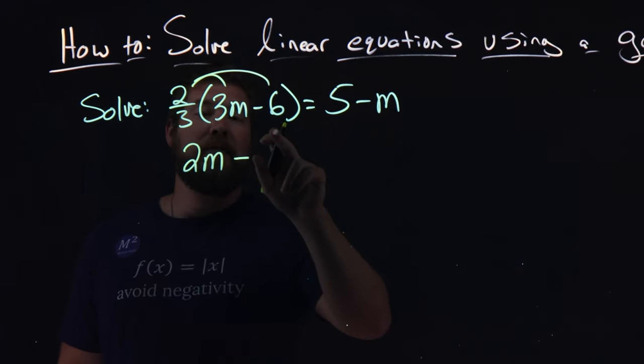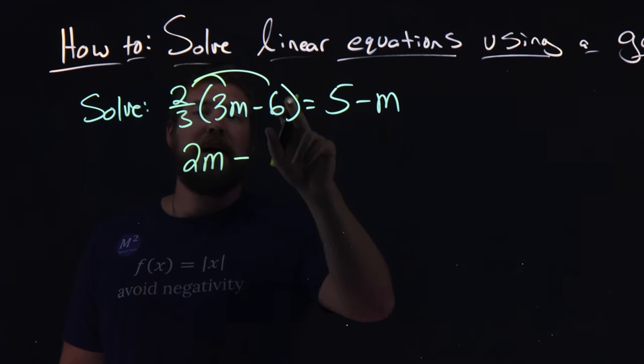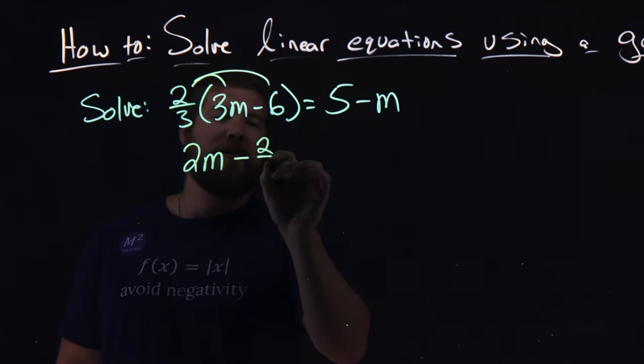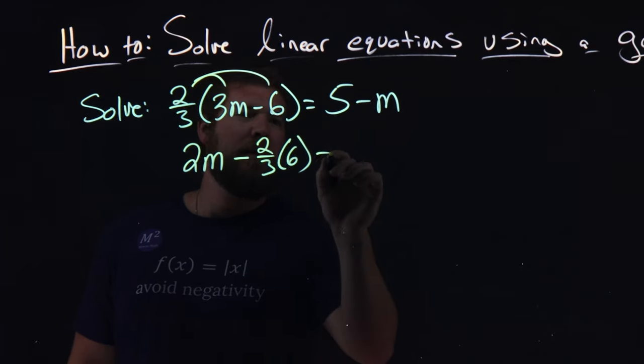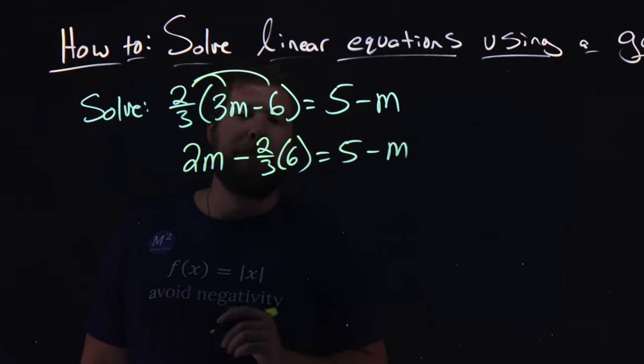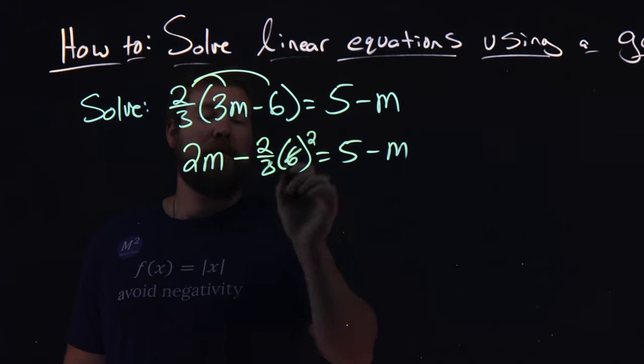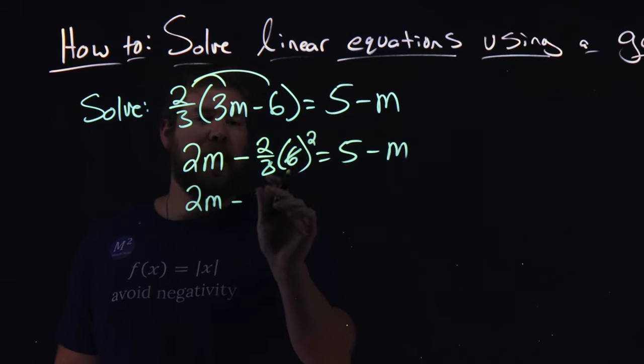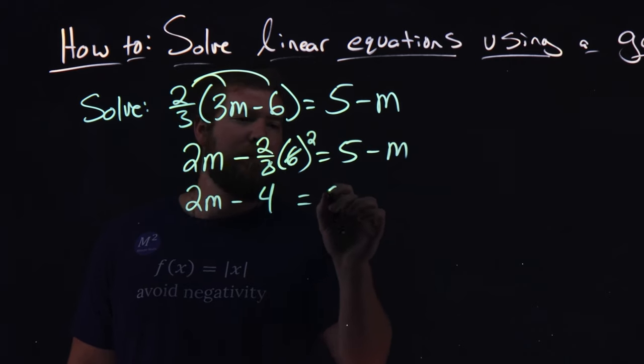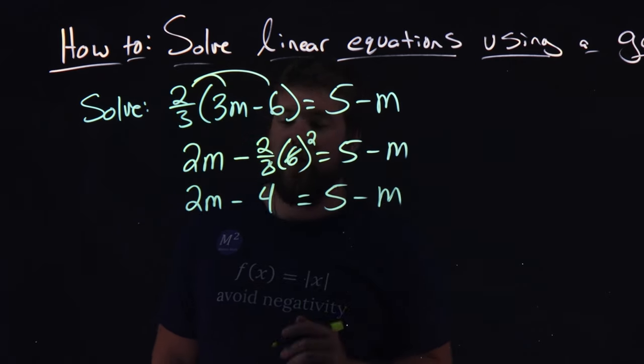The 3 and the 6 kind of cancel out, leaving a 2 up top. I'll just write it out here: 2 thirds times 6, so it's a little easier to see. And bring down the 5 minus the m. The 2 thirds and the 6 cancel, and we have a 2 up here. So we have 2m minus 2 times 2, which is 4, and then 5 minus m.